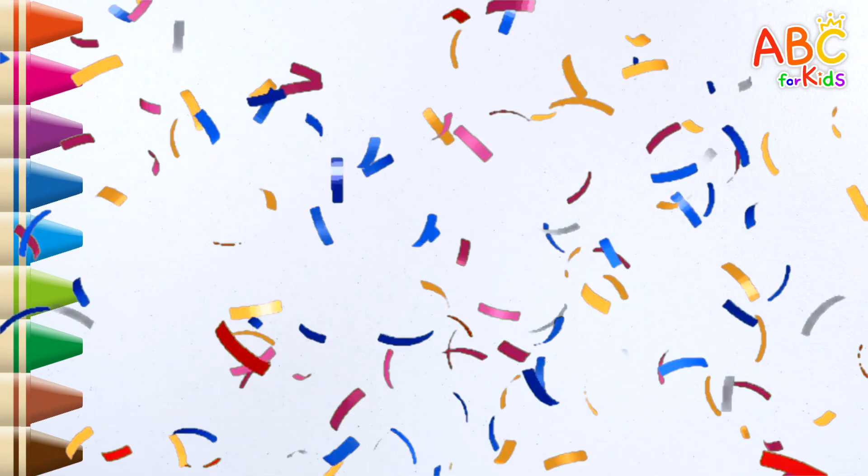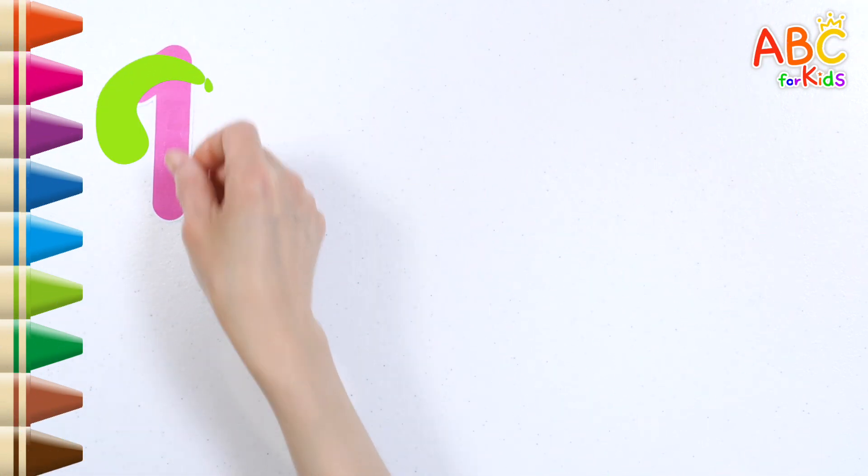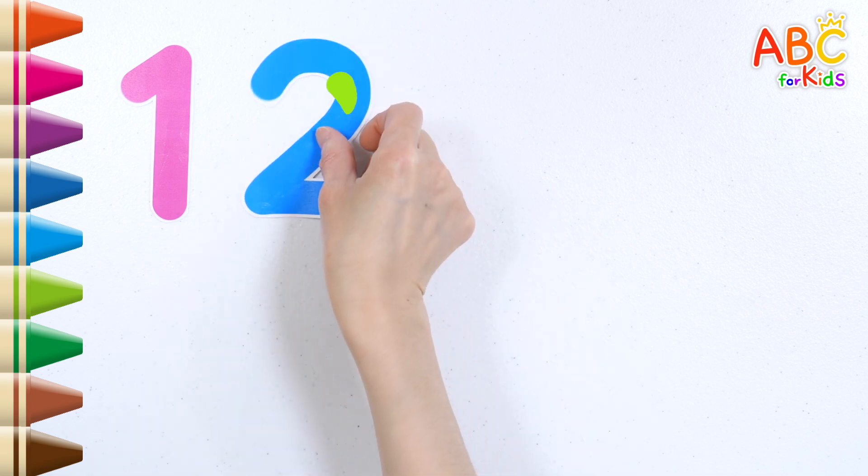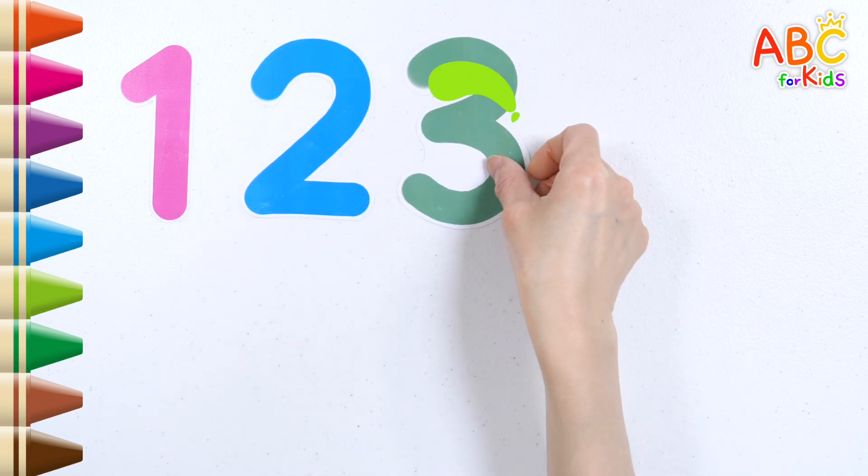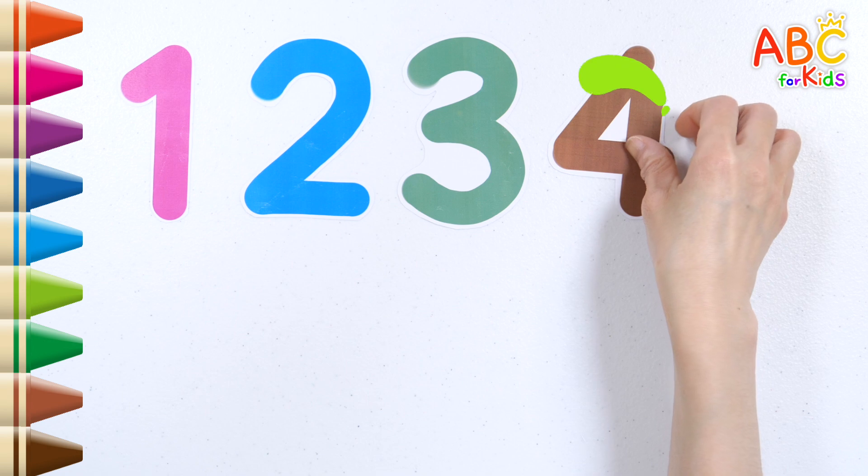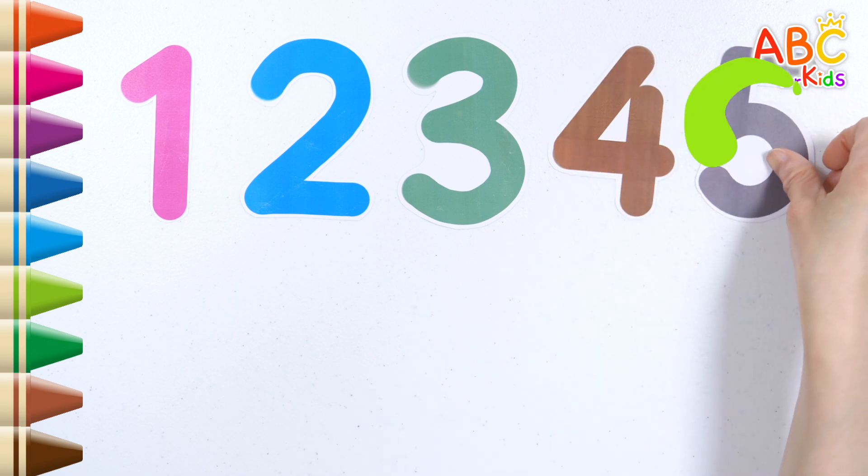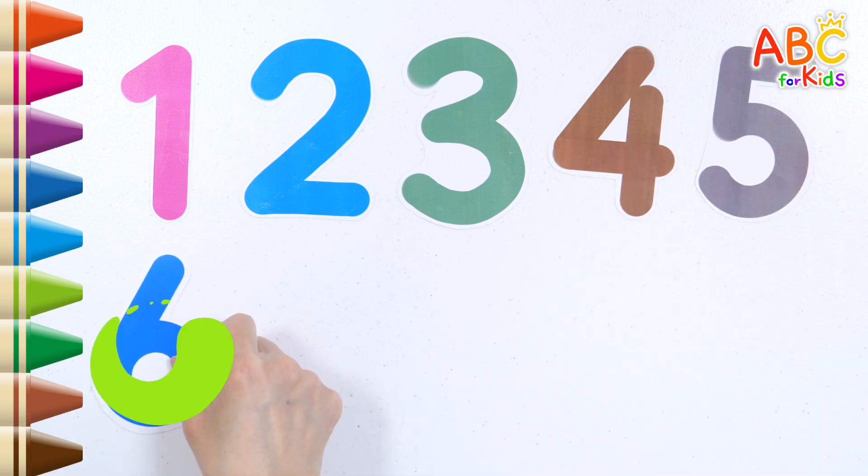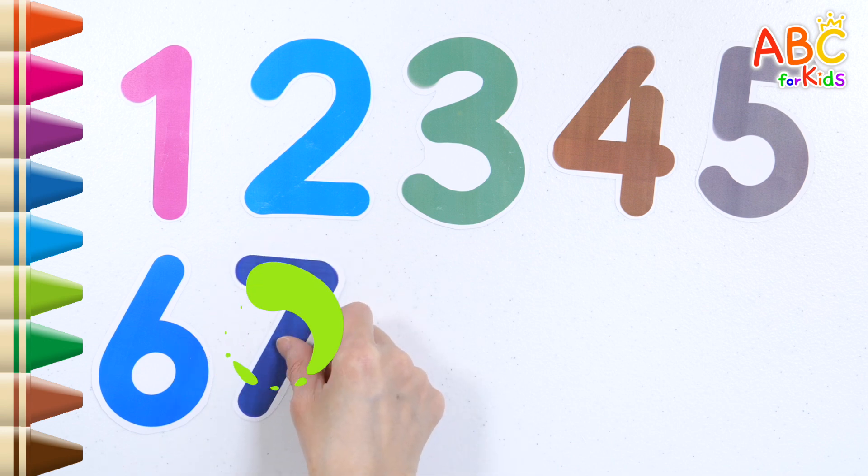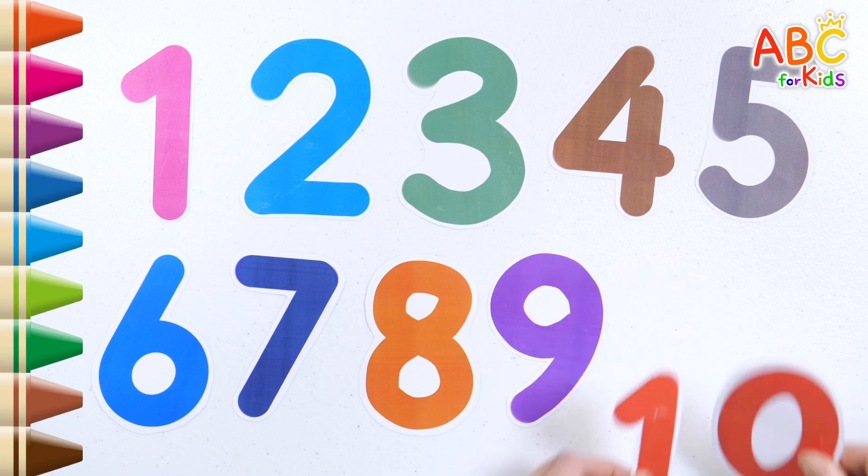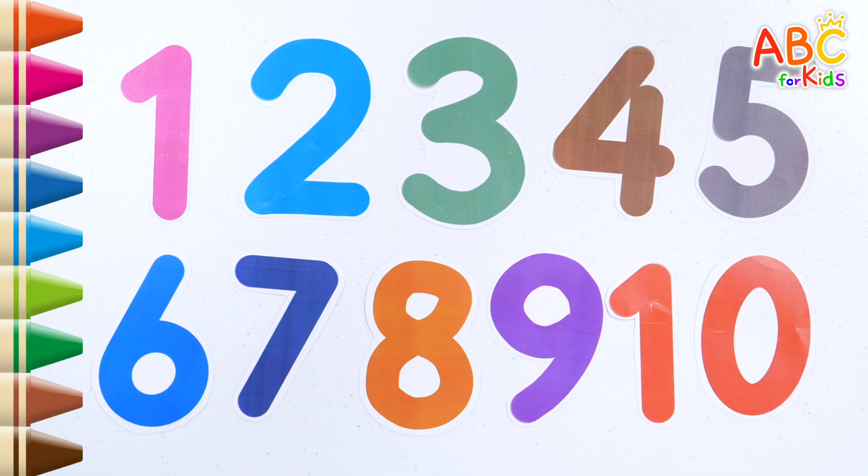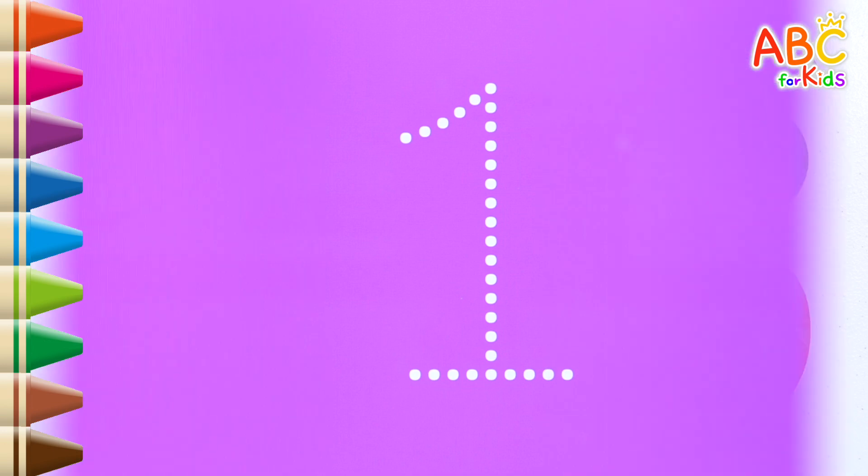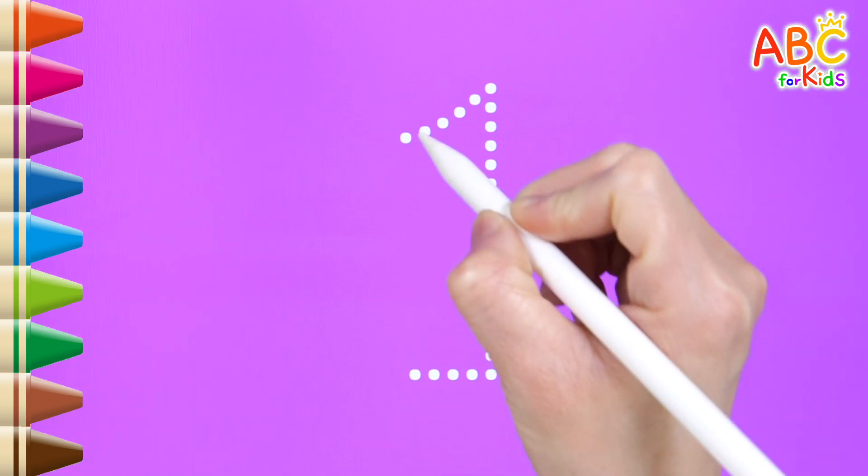Let's read the numbers one by one on the table. One, two, three, four, five, six, seven, eight, nine, ten. Good job! Let's write the numbers one by one this time.